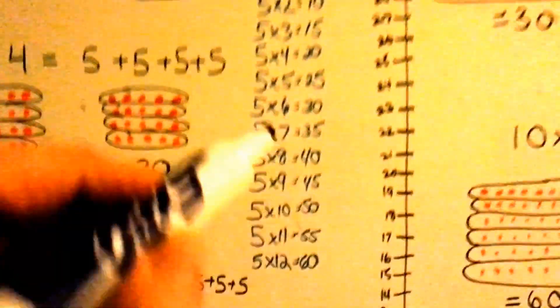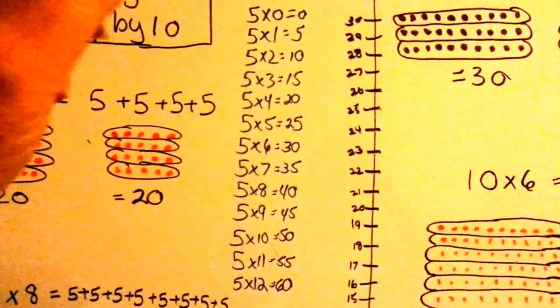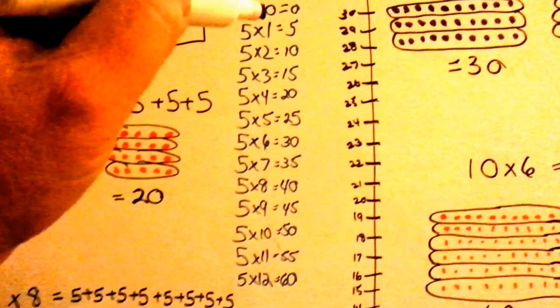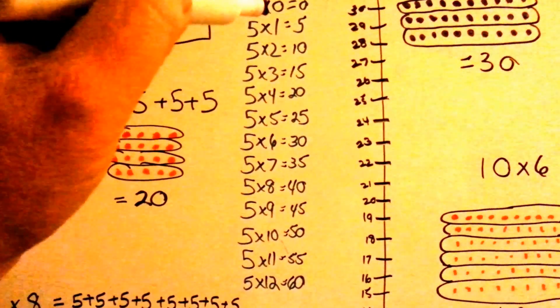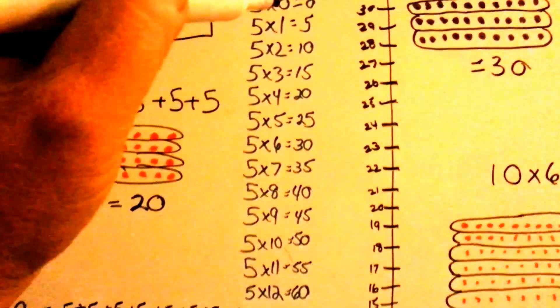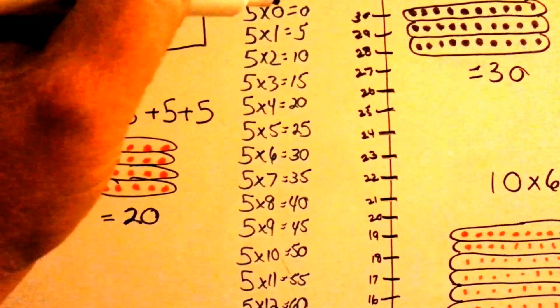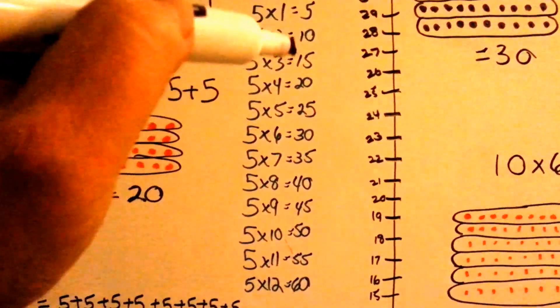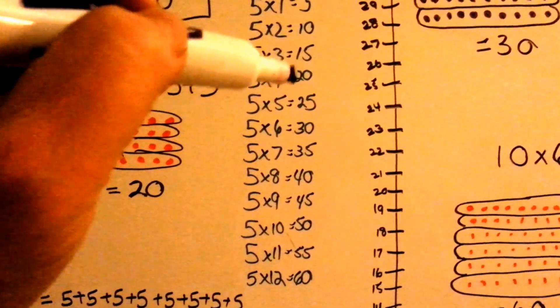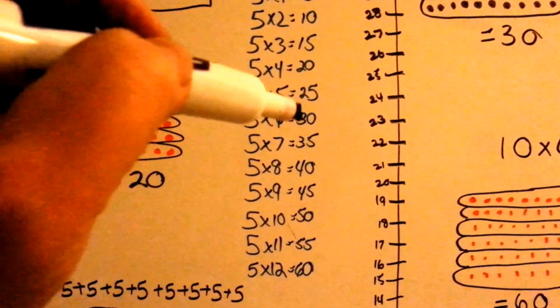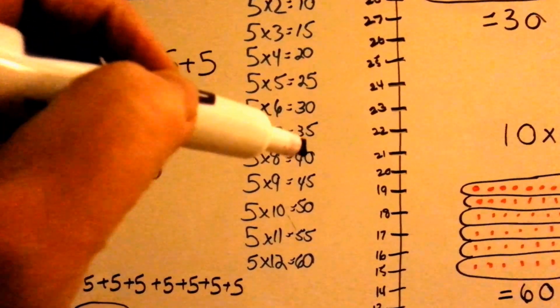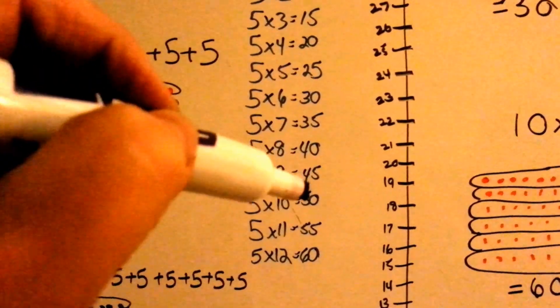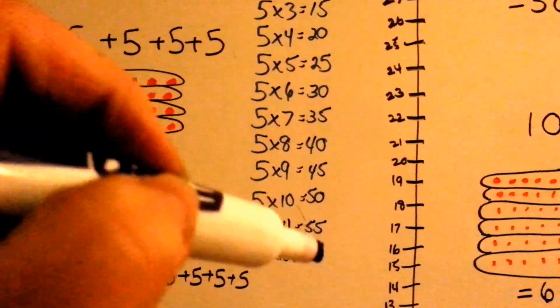The 5 times table skip counts by 5s. Starting with 0: 5, 10, 15, 20, 25, 30, 35, 40, 45, 50, 55, 60.